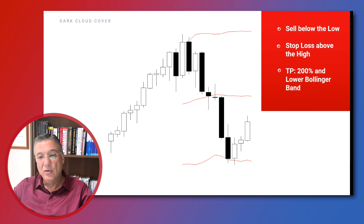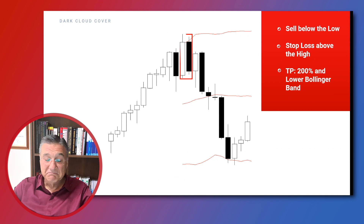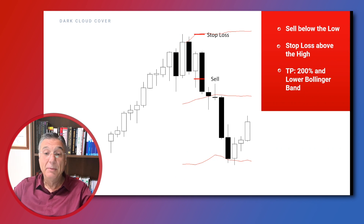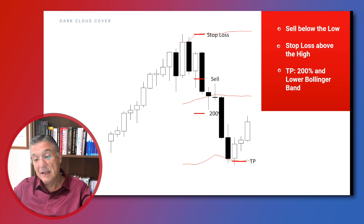In the final strategy we use Bollinger Bands. We identify the dark cloud cover at the top area of the upper band, enter with a sell order below the low price of the pattern, and place a protective stop loss above the high price of the pattern. We use the 200% level to close part of the trade and book partial profits, then close the remainder when price hits the lower Bollinger Band. I hope you enjoyed it and learned something new — stay tuned for more.